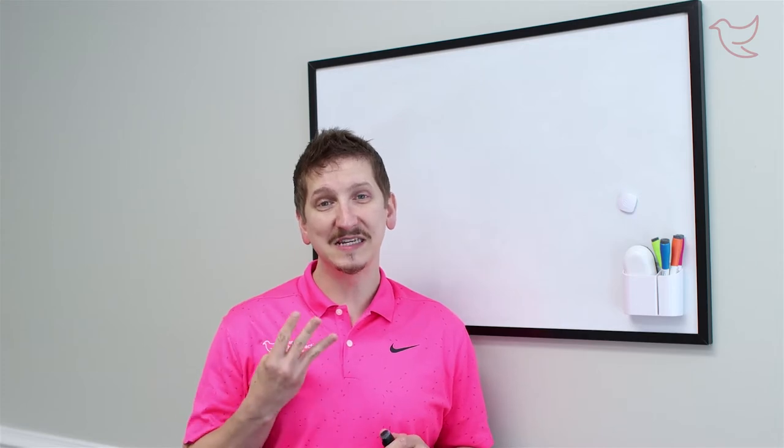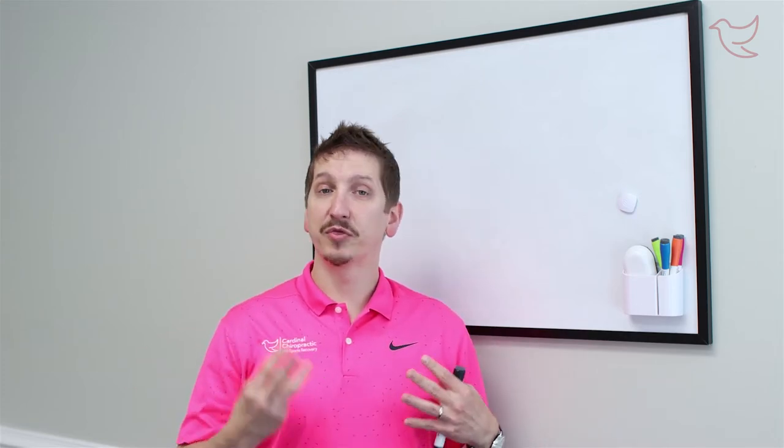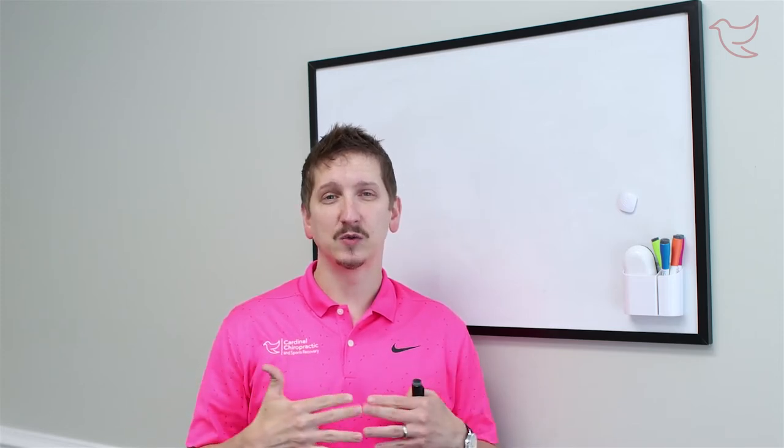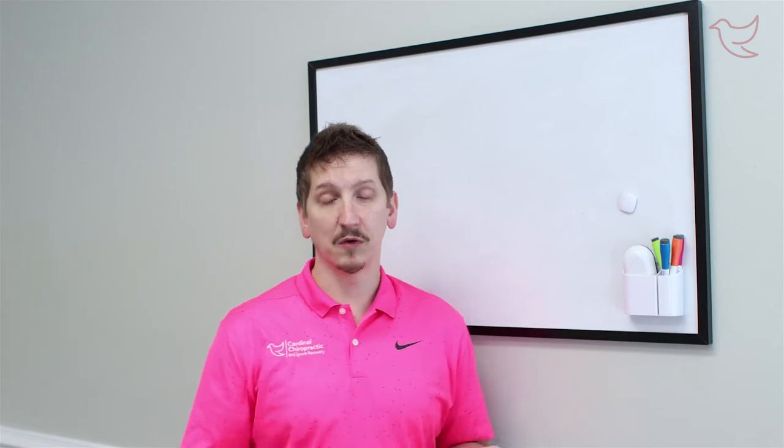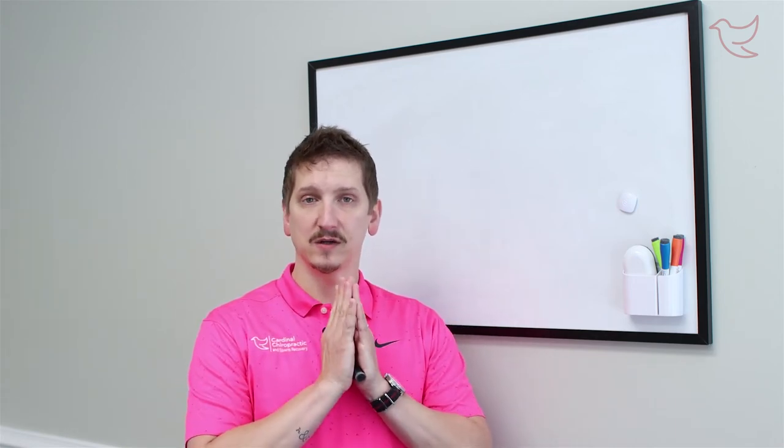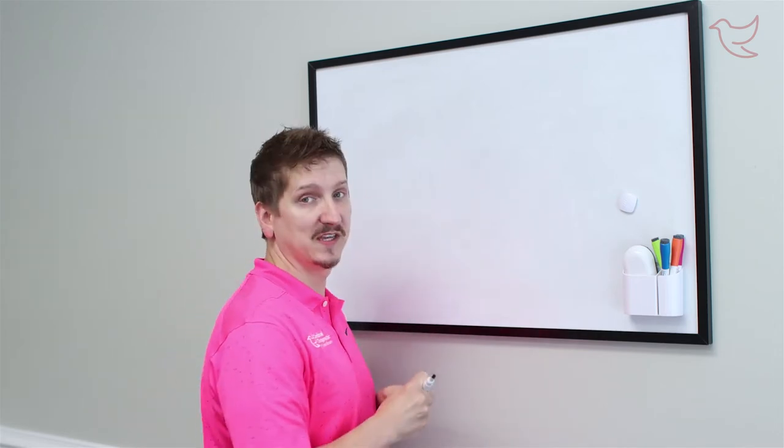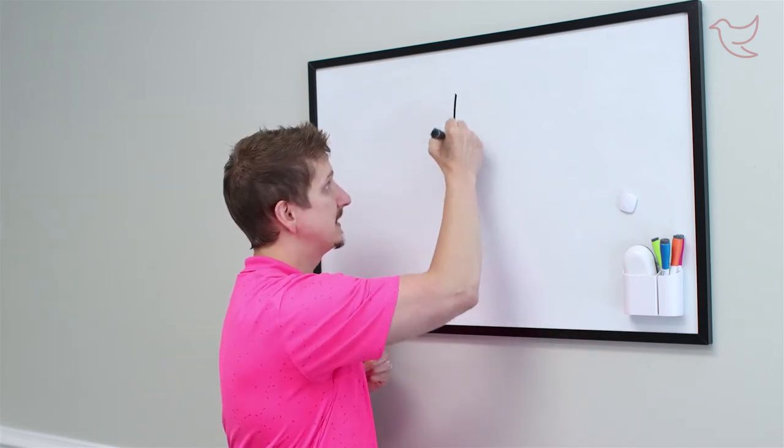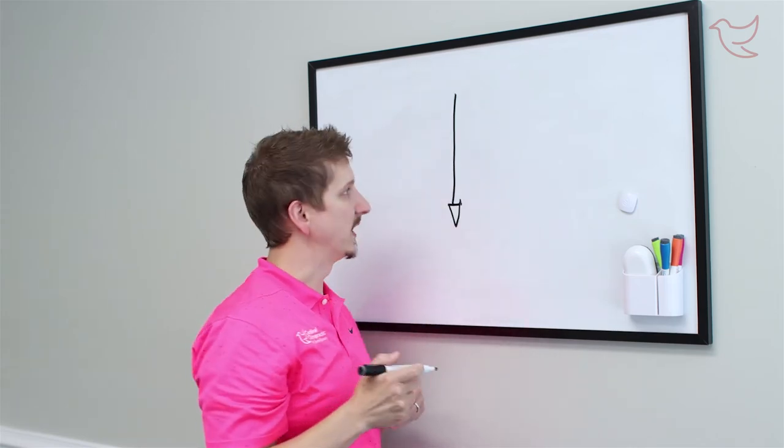We're going to talk about the three different movements that are three different planes that we need to control for good core stability. So first let's look at in the front planes, going forwards and backwards. So this right here is our spine and this is our sacrum basically down at our waist.